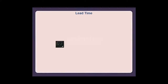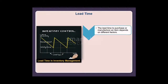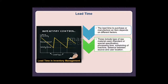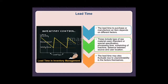Lead time: The lead time to purchase or manufacture an item depends on different factors. These include the type of raw material used, standard or special specification, processing time, machine scheduling, and distance between source and user location. The lead time may also fluctuate due to unpredictability in these factors themselves.